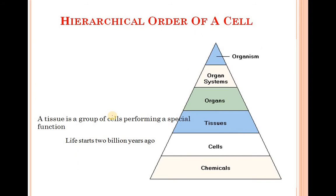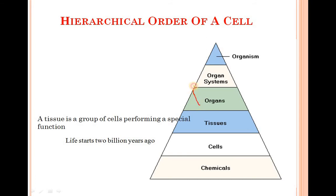Now come to the hierarchical order of a cell. First of all, a chemical came into being — scientists call it a 'gold' chemical. From this chemical, two billion years ago, life started with a cell. Then many cells came together to form a tissue. A tissue is a group of cells performing a special function. Then loads of tissues come together to form an organ, like the heart, lung, and kidney. Then loads of organs come together to form an organ system, like the respiratory system, excretory system, and digestive system.